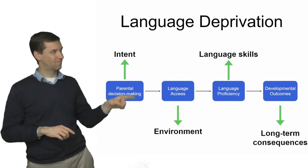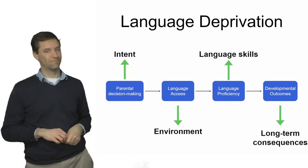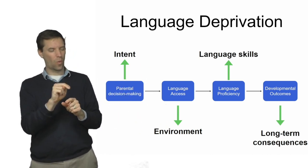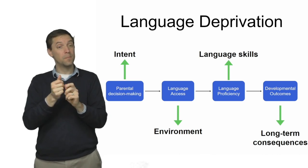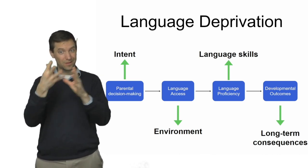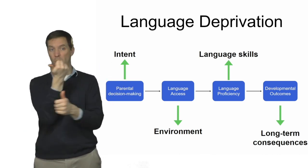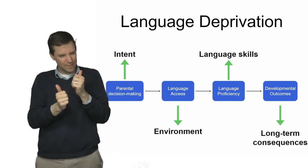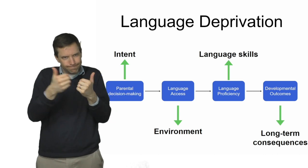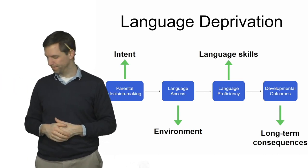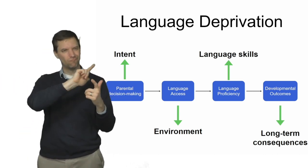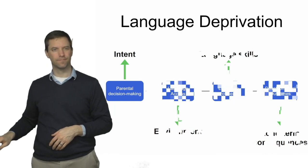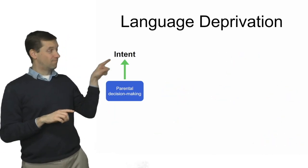As you can see here, there are four senses: intent, environment, language skill, and long-term consequences. Each of these senses of language deprivation has its own meaning, but the way language deprivation is used in the literature is sometimes quite ambiguous — it's unclear whether it applies to one of these or all of them. So my goal is to individuate those for you, and we'll step through each in turn, starting with intent.